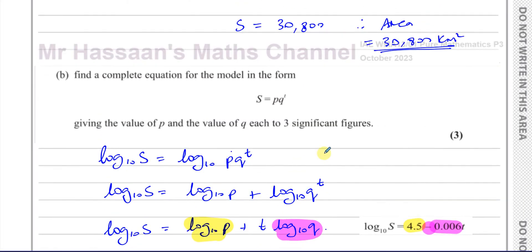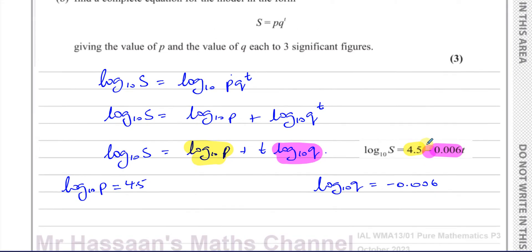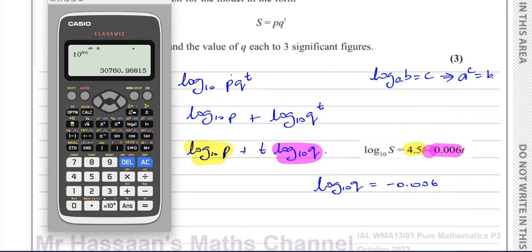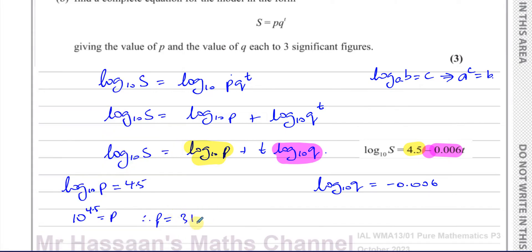We can use the same reasoning as we did before, where we know that log base a of b equals c can be rewritten in index form. The base is the base, the c is the power, and the b is the result. So we can say 10 to the power of 4.5 equals p. Therefore p equals 10 to the power of 4.5, which is 31,622.77. We're going to write this to three significant figures, that's 31,600.